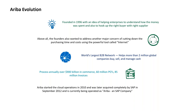With cloud, the system is hosted and maintained by Ariba itself. You are simply given a link to log in and manage your business. It's similar to Gmail — you don't know where the server is; you just get your email ID and password and can manage everything from anywhere. That is the key difference between cloud and on-premise.